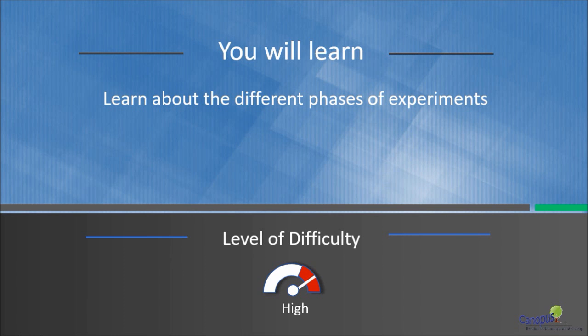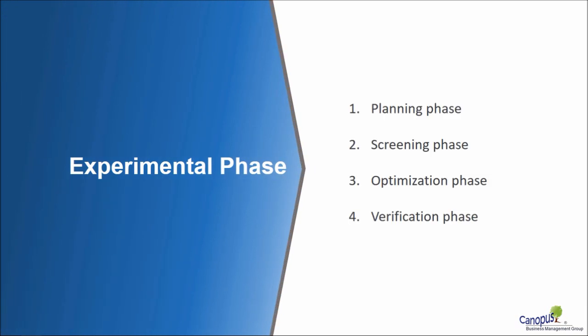In this lecture, we will learn about the different phases of experiments. Structured experiments are performed broadly in four different phases: the planning phase, screening phase, optimization phase, and finally the verification phase. Let's understand each of these different phases in greater detail.